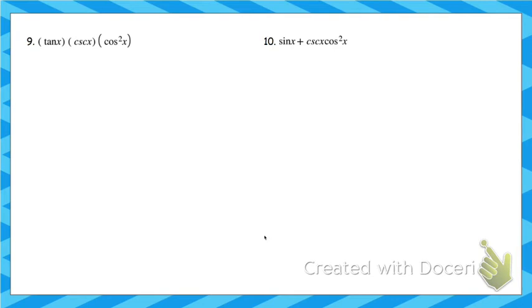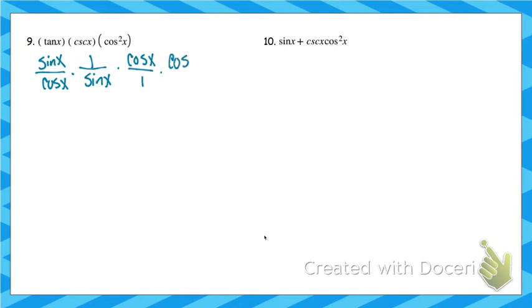On this one, I'm going to rewrite everything in terms of sine and cosine. There's no adding here, so there's nothing to factor or FOIL. Tangent is sine over cosine. Cosecant is 1 over sine. Cosine squared is already in terms of sine and cosine, so I'll leave it. Sine cancels, one of the cosines cancels, and I'm left with cosine.